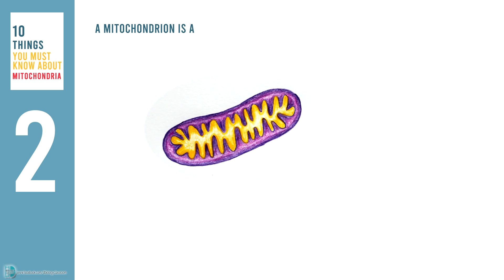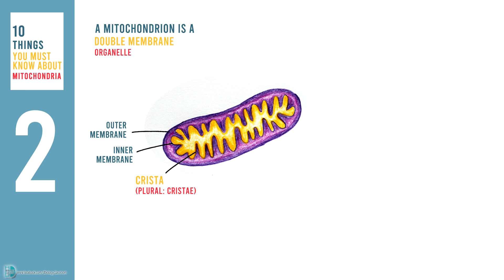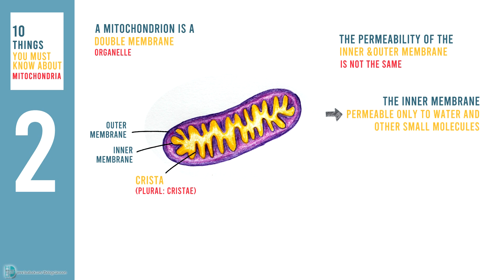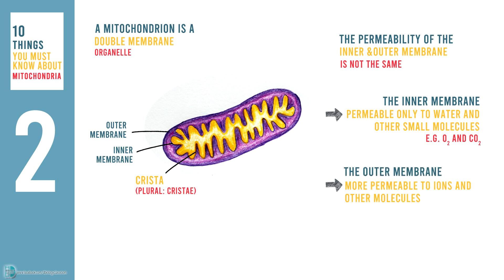A mitochondrion is a double membrane organelle, with the inner membrane folding into structures called cristae. The permeability of the inner membrane and the outer membrane is not the same. The inner membrane is permeable only to water and other small molecules such as oxygen and carbon dioxide. The outer membrane is more permeable to ions and other molecules, and is more similar to the plasma membrane.